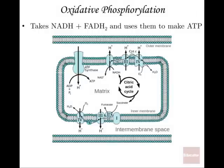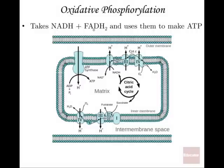Oxidative phosphorylation: oxidation means electrons are coming off of something, and reduction means electrons are gained. In redox reactions, NADH and FADH₂ are oxidized — they lose what they gained — and this helps make a lot of ATP. Phosphorylation means adding phosphates to something; here you're phosphorylating ADP to make ATP.